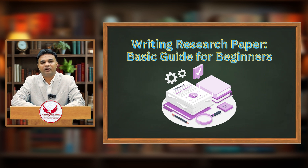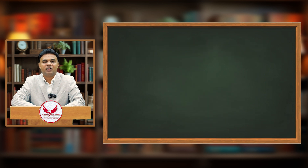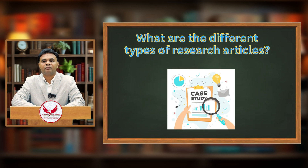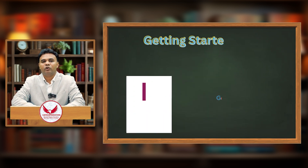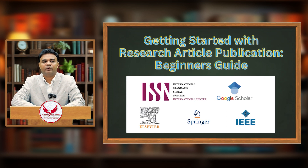These are two different things we need to understand. Doing research is a separate thing; writing a research article is a separate thing. We also need to understand what are the different types of research articles that are being written, and then we will move forward with writing a research article for publication in a specific journal.